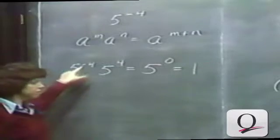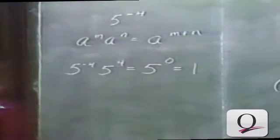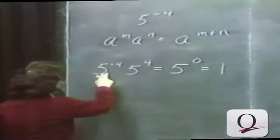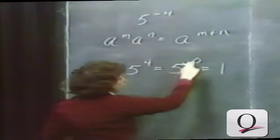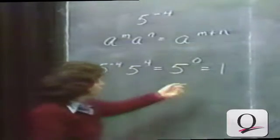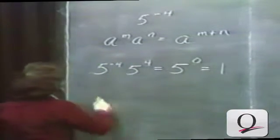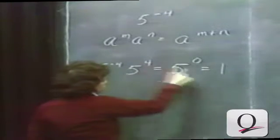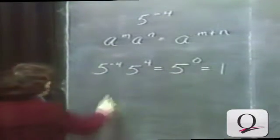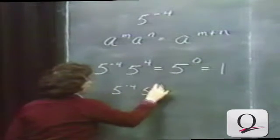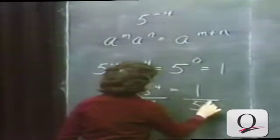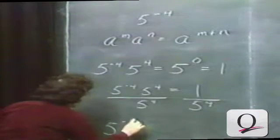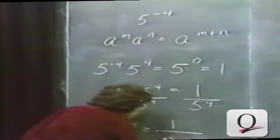If we have 5 to the minus 4 power and multiply by 5 to the 4 power, and if the first rule of exponents is going to hold true for negative number exponents, then 5 to the minus 4 times 5 to the 4 must be 5 to the minus 4 plus 4, or 5 to the 0 power, which we've decided is 1. So 5 to the minus 4 power times 5 to the 4 power equals 1. Dividing both sides by 5 to the 4, we get that 5 to the minus 4 power is 1 over 5 to the 4 power.